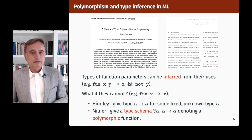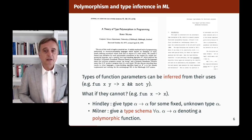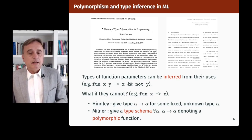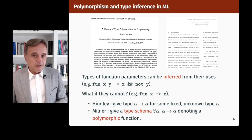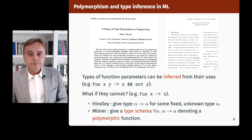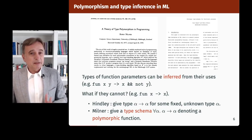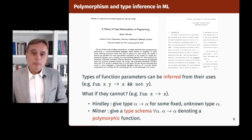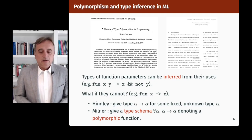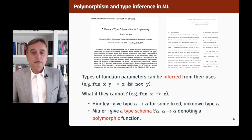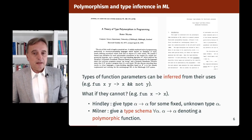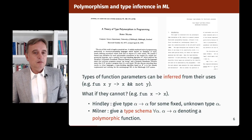Milner also wanted the types to not get in the way, so that users should write programs pretty much like they would in Lisp, without type annotations. So he studied type inference and noticed that types of function parameters can be inferred from their uses. But what if types cannot be inferred, as in fun X → X, where the use of X tells us nothing about its type? Earlier work by Hindley for the simply typed lambda calculus would give type alpha → alpha for some fixed unknown alpha. Milner noticed this identity function could be given a type schema for all alpha, alpha → alpha, denoting a polymorphic function usable at several different types.